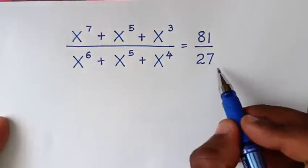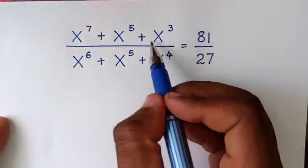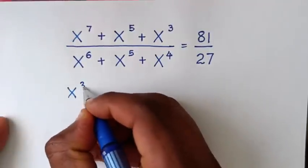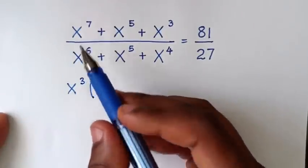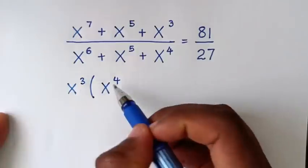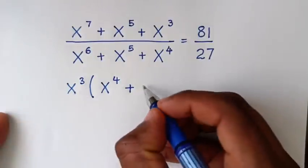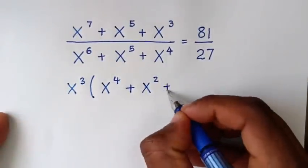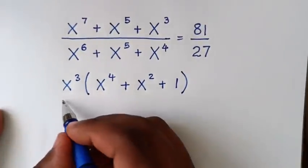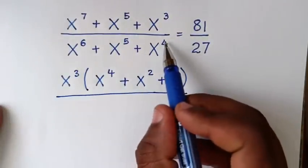In the numerator, x³ is the smallest exponent, so it is common. We take x³ out of the bracket: x⁷ divided by x³ is x⁴ (since 7 minus 3 is 4), plus x⁵ divided by x³ is x², plus x³ divided by x³ is 1.